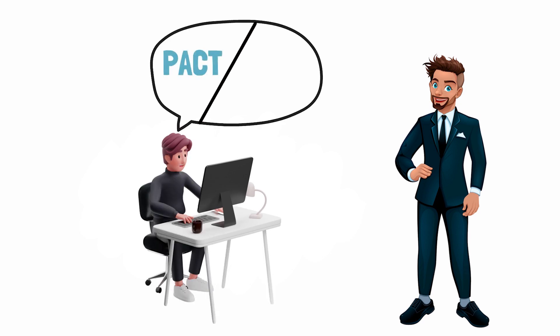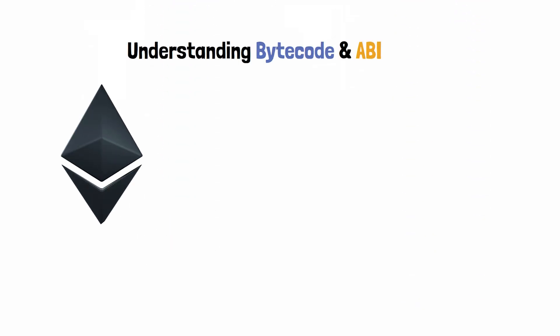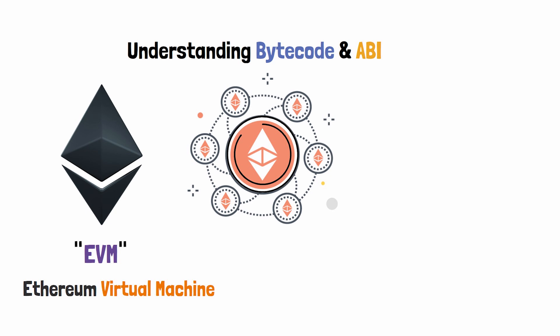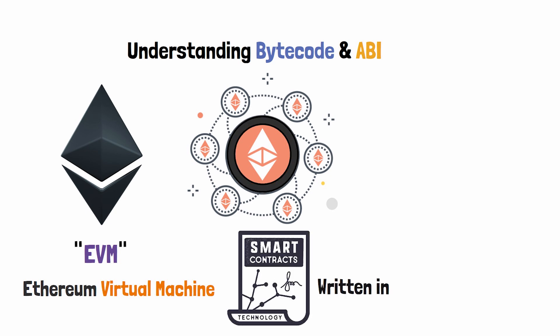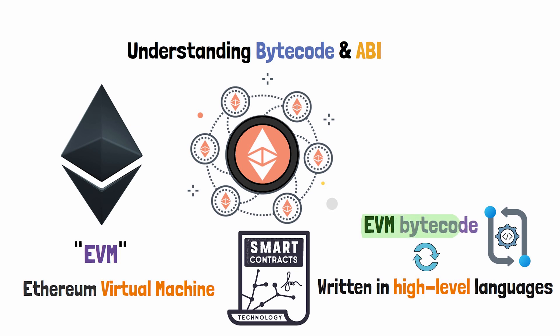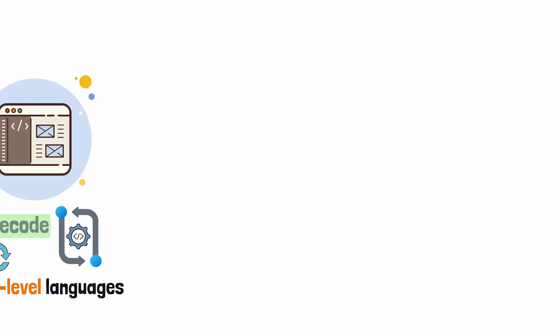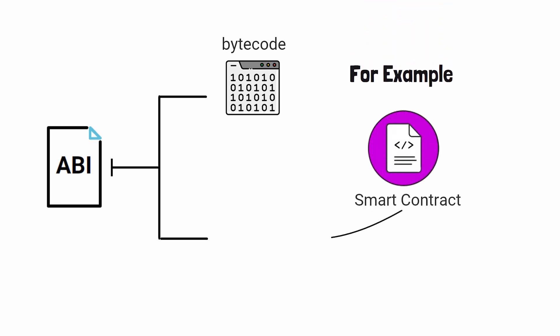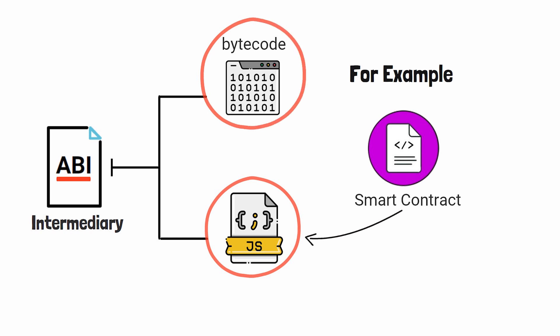So let's dive into understanding bytecode and ABI. Ethereum uses what's called an EVM, or the Ethereum Virtual Machine. The virtual machine is the core component of the network. Smart contract code that is written in high-level languages needs to be compiled into EVM bytecode to run. EVM bytecode is executable code for the EVM. Contract ABI is an interface designed for interacting with EVM bytecode. For example, if you want to call a function in a smart contract with your JavaScript code, ABI plays a role as the intermediary between the JavaScript code and the EVM bytecode to interact with each other.